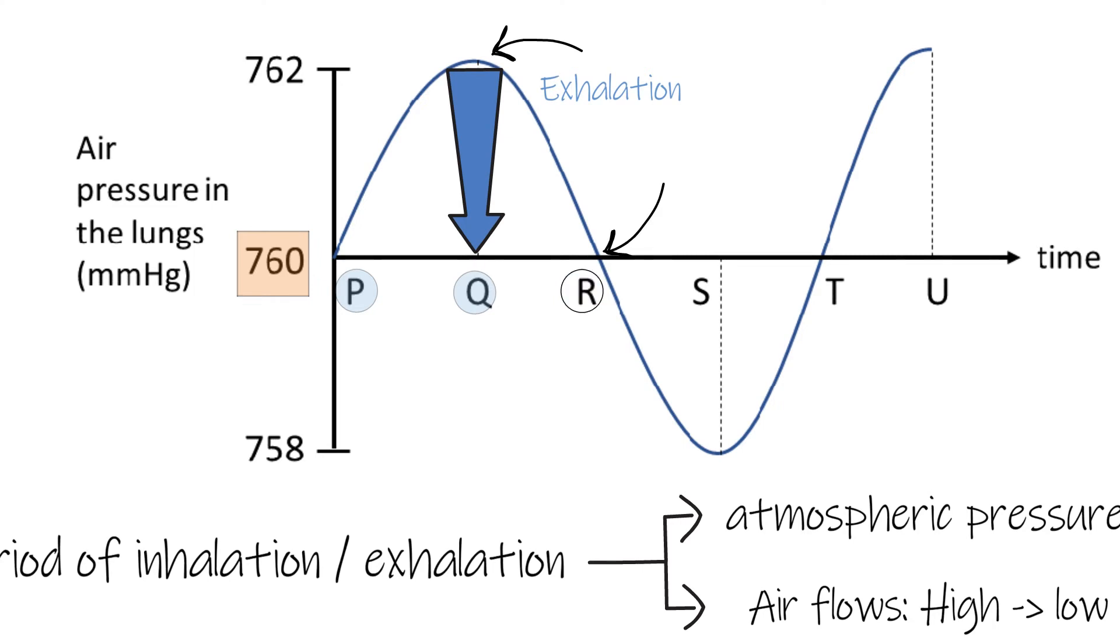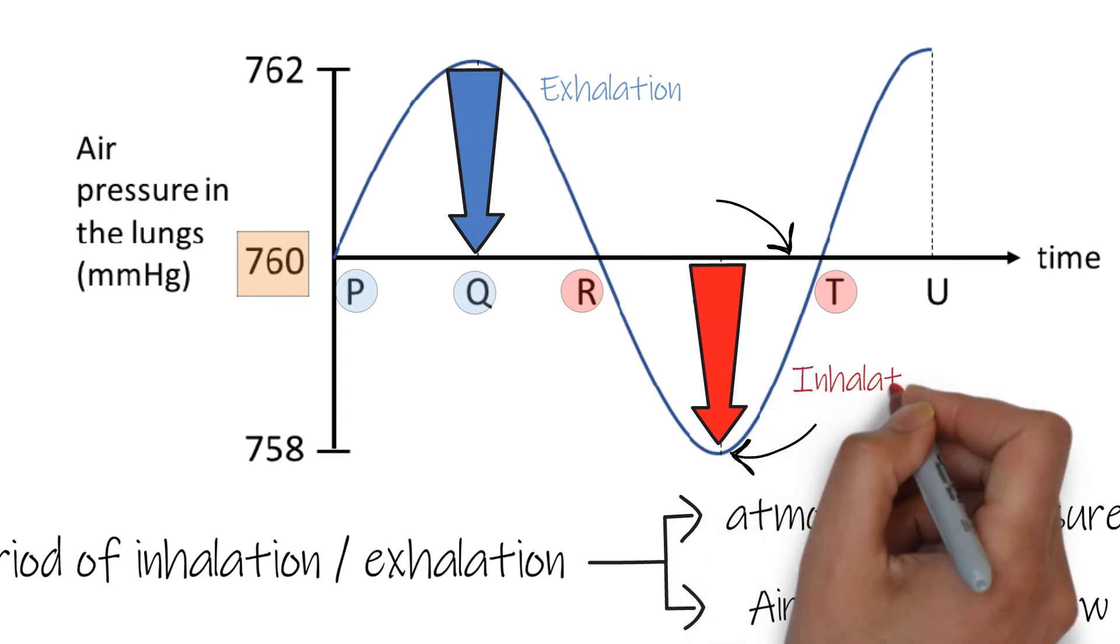In the period RST, the curve is below 760 mmHg. That means the lung pressure is lower than the atmospheric pressure. So the air flows into the lungs from the atmosphere. Inhalation occurs.